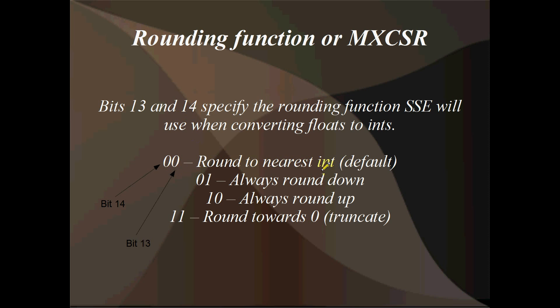So something like 0.52 would be rounded up to 1, and something like 0.01 would be rounded down to 0. We've also got function 01, if bit 13 is set to 1 and bit 14 is set to 0 in MXCSR - that means always round down. We've got function 10, which means always round up. And we've got function 11, which is always round towards 0, or truncate - which is the regular C++ rounding when you cast from a float to an int.